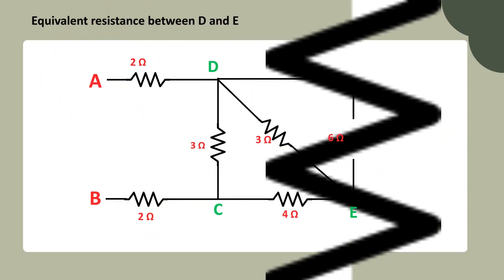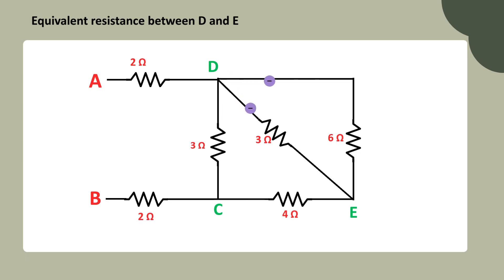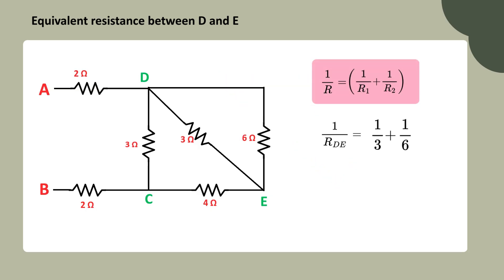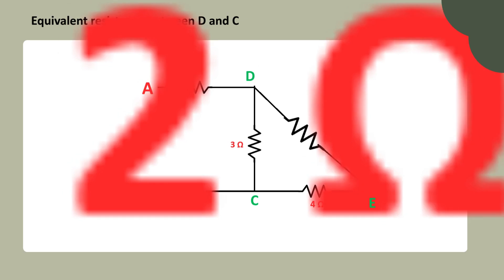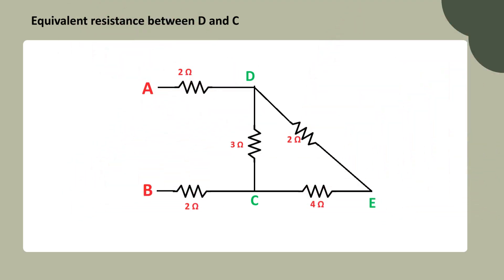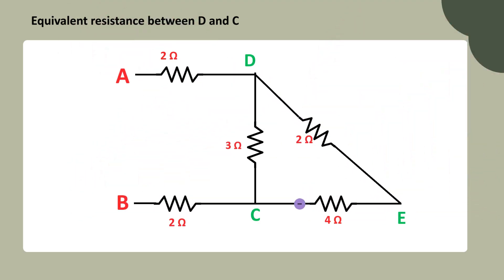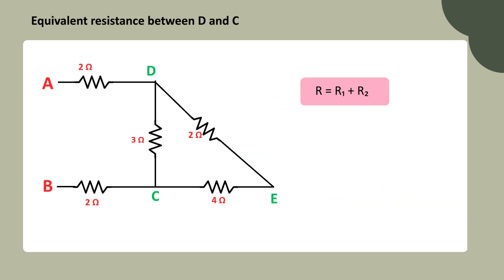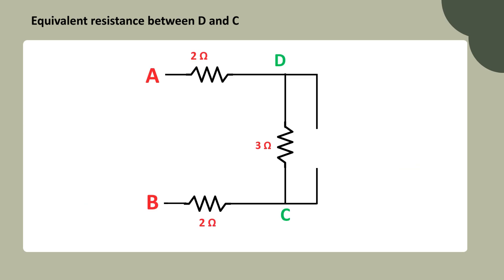Let's simplify the circuit by replacing the 6 ohm resistor. The current flows through both the 3 ohm and 6 ohm resistors, and since the current splits between them, these two resistors are connected in parallel — giving an equivalent resistance of 2 ohms. Now replace the resistors between D and E with a single 2 ohm equivalent resistor. The same current flows through both the 2 ohm and 4 ohm resistors, so they're connected in series, giving an equivalent resistance of 6 ohms. Replace them with a single 6 ohm equivalent resistor.